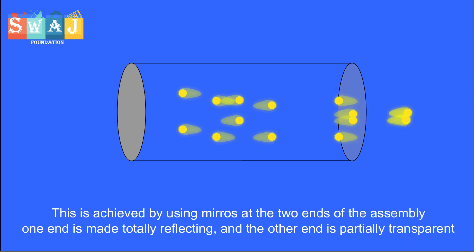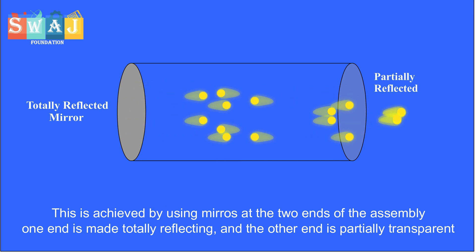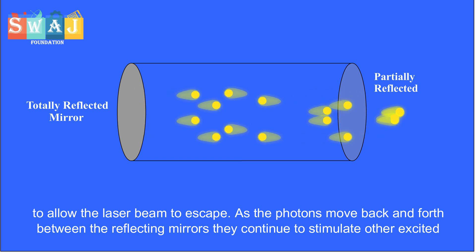This is achieved by using mirrors at the two ends of the assembly. One end is made totally reflecting and the other end is partially transparent to allow the laser beam to escape.